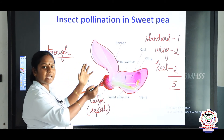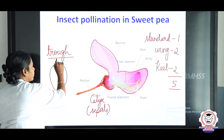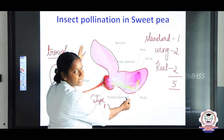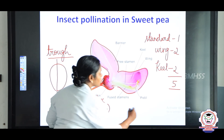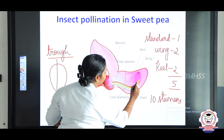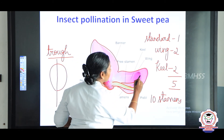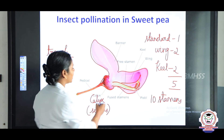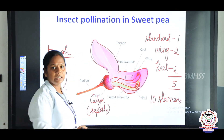The floral parts of sweet pea are arranged like a trough, and the flower is zygomorphic — meaning it can be divided into equal halves from only one plane. It consists of ten stamens: nine stamens are fused to form a staminal tube, and one is free — a nine plus one arrangement. The gynoecium is located inside, consisting of an ovary, style, and stigma. This is the structure of the sweet pea flower.